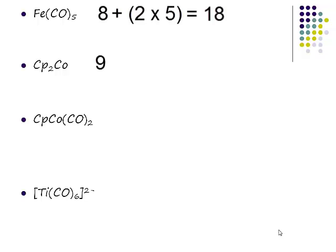A CP ligand is a how many electron donor? Five. So we have a CP ligand. How many of those do we have? Two times five plus nine is 19.